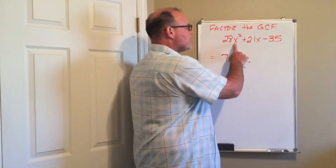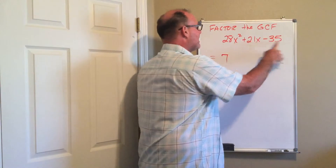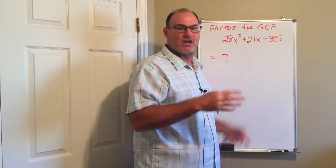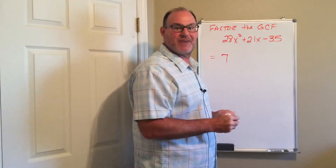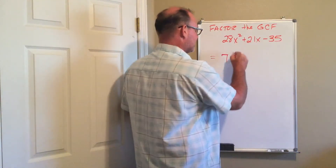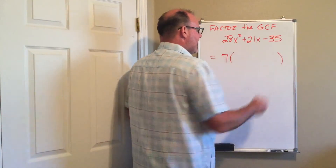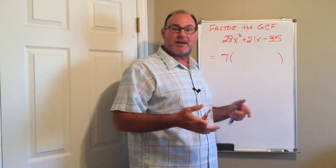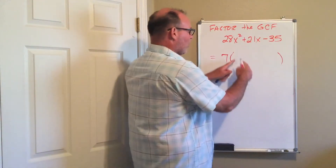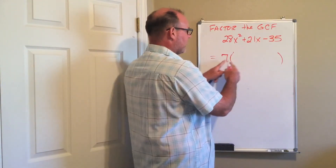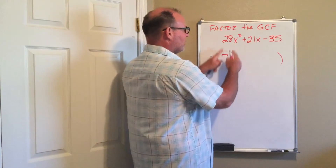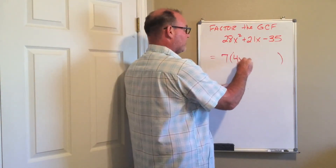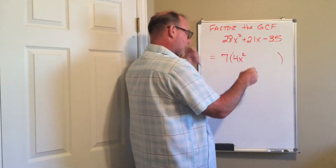There are no variables in common. The 35 does not have an x, so I do not need to factor out any x's. Now I ask myself: what times 7 would give me 28x squared? The answer is 4x squared.